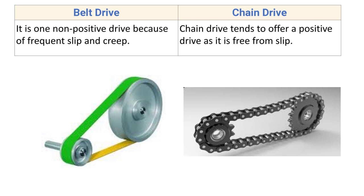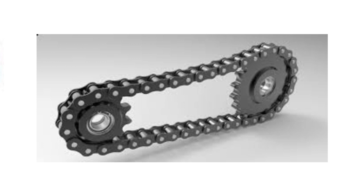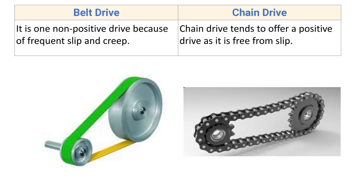Chain drive offers a positive drive as it is free from slip. Motion is transmitted through successive engagement and disengagement of the chain from the sprocket. The chain does not slip over the sprocket, so we get an exact velocity ratio. Hence chain drive is also known as a positive drive.